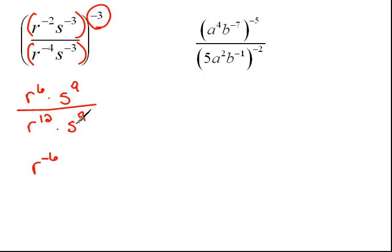And s to the 9th over s to the 9th, again, we are dividing like bases, which means we subtract the exponents. 9 minus 9 is 0. s to the 0 is 1, so we can just forget about that. Another way to look at it is that you can cancel out common factors on top and bottom.